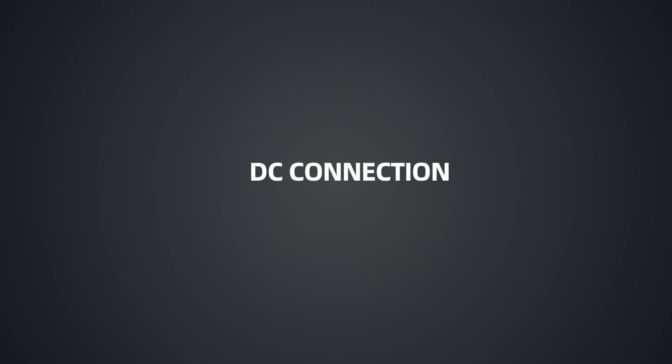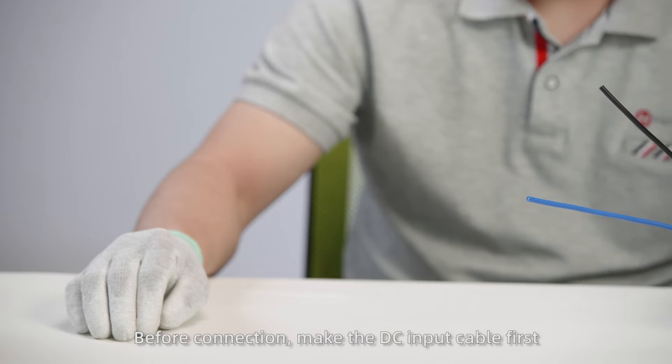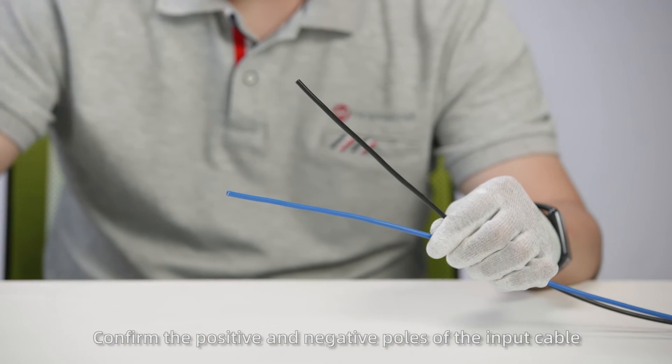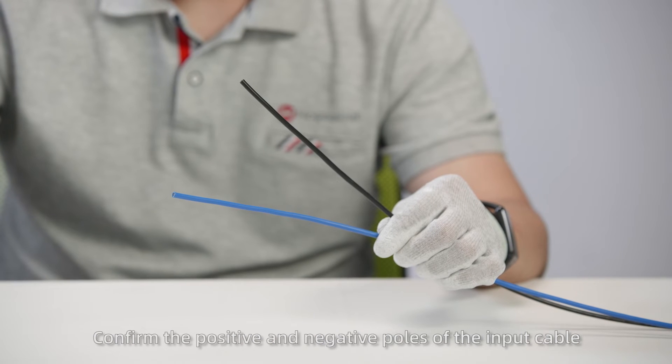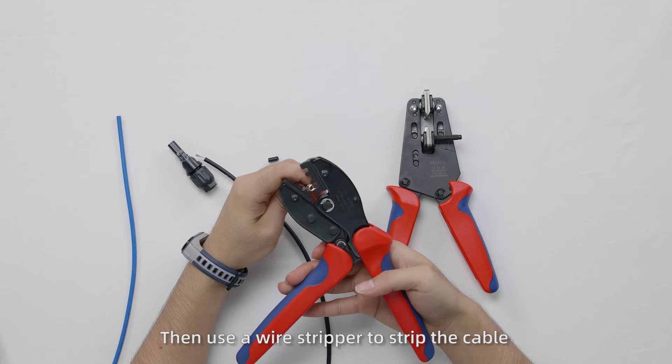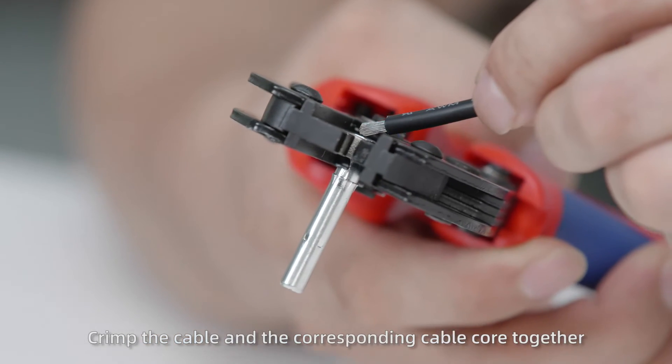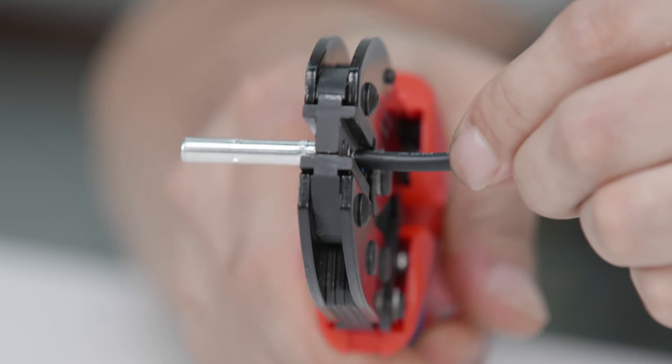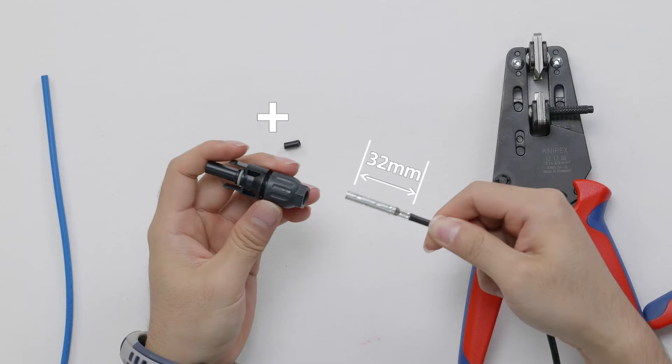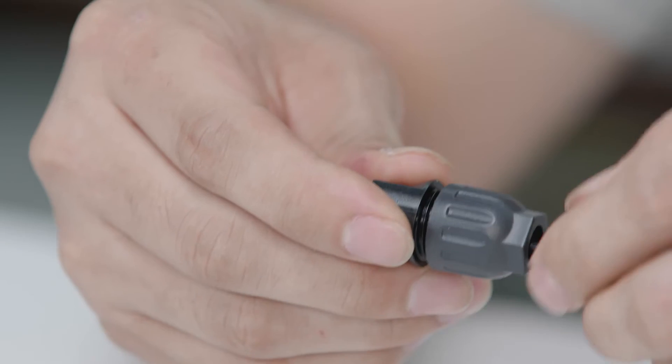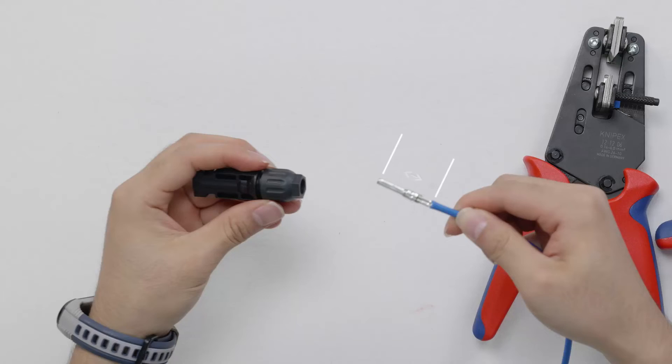Finally, connect cables on the DC side. Before connection, make the DC input cable first. Confirm the positive and negative poles of the input cable. Use a wire stripper to strip the cable. Crimp the cable and the corresponding cable core together. Finally insert the cable core into the male and female poles of the MC4 connector according to the correct polarity and tighten the back cover.